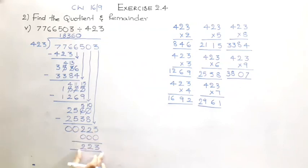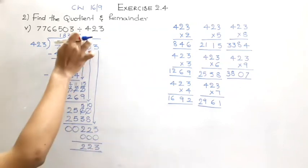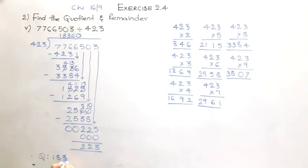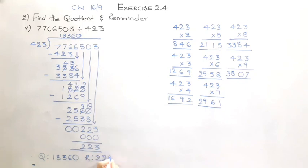The remainder will be right, but the quotient will become wrong. So please be careful with this kind of problem. The quotient is going to be 18360 and the remainder is going to be 223. I am repeating this point again: